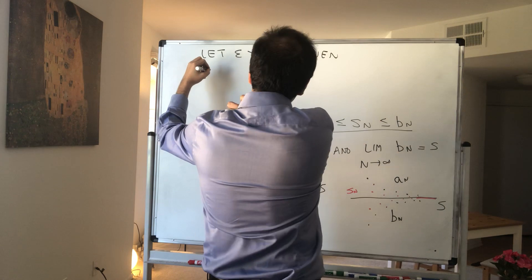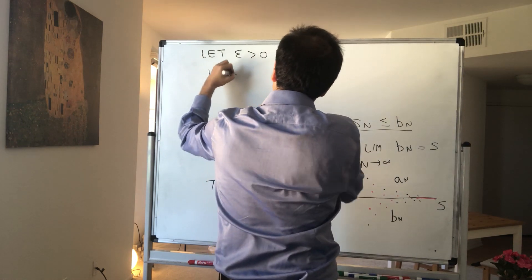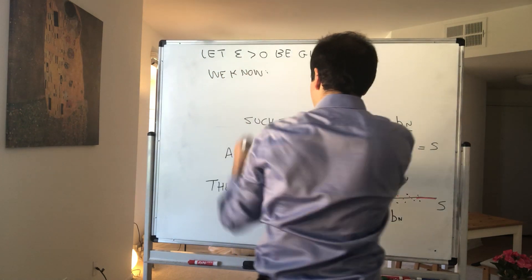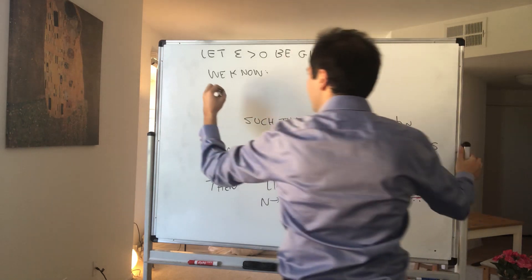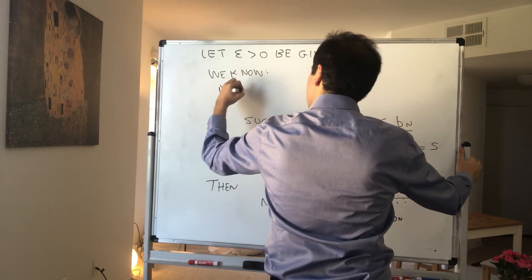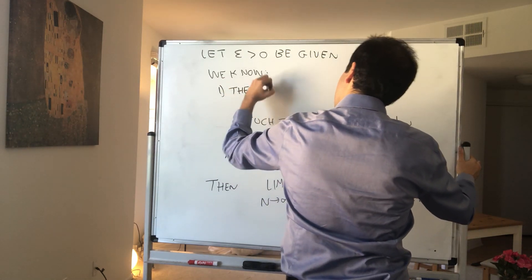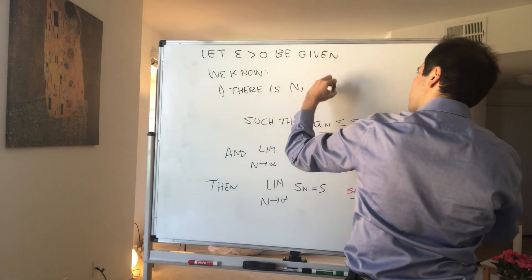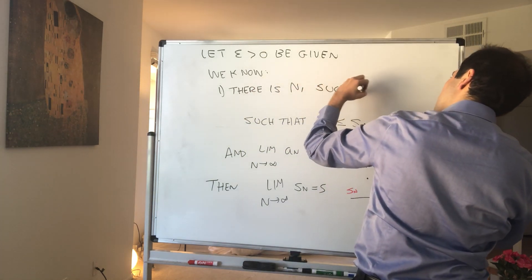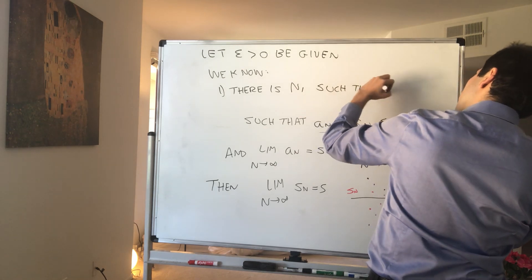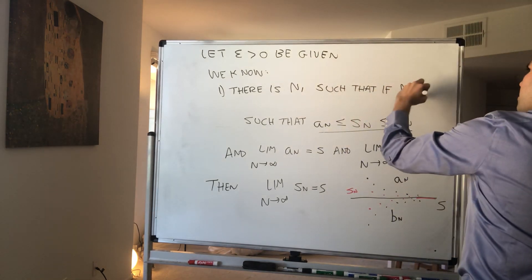Then what do we know? We know, first of all, because a_n converges to s, we know that there is N1 such that if n is bigger than N1, then a_n is very close to s.